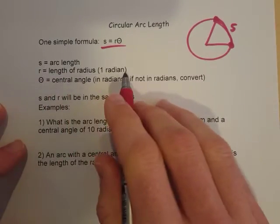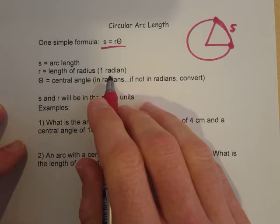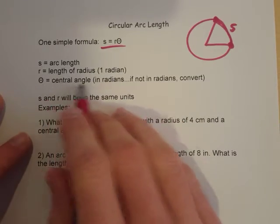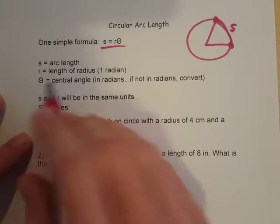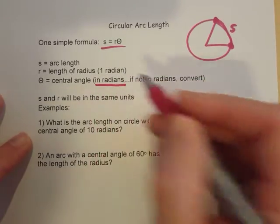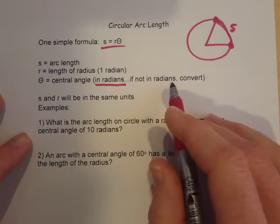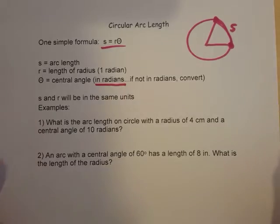R is the length of the radius, or one radian in the circle. And then theta is the central angle. Now, that central angle must be represented in radians. If it's not in radians, then we need to convert it to radians.